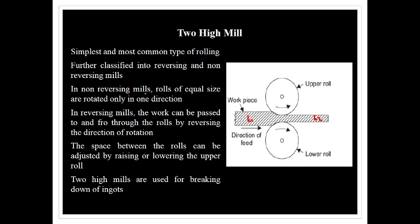The 2-high rolling mill is the simplest and most common type of rolling, further classified into reversing and non-reversing mills. In non-reversing mills, the rolls of equal size are rotated only in one direction. You can use the rotation in one direction only.